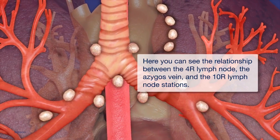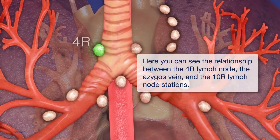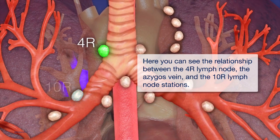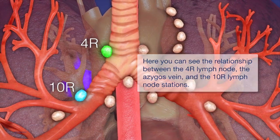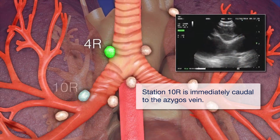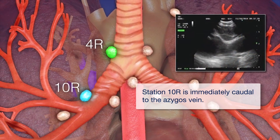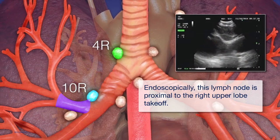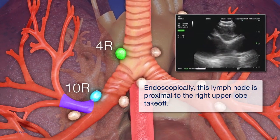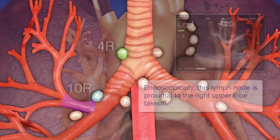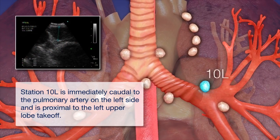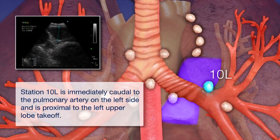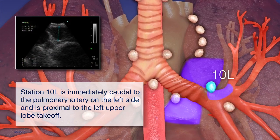Here you can see the relationship between the 4R lymph node, the azygous vein, and the 10R lymph node stations. Station 10R is immediately caudal to the azygous vein. Endoscopically, this lymph node is proximal to the right upper lobe takeoff. Station 10L is immediately caudal to the pulmonary artery on the left side and is proximal to the left upper lobe takeoff.